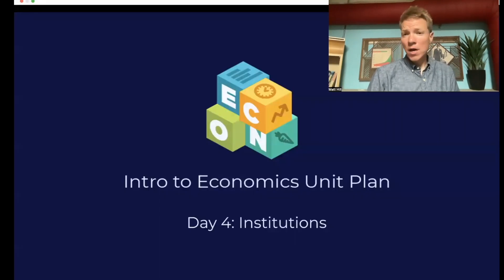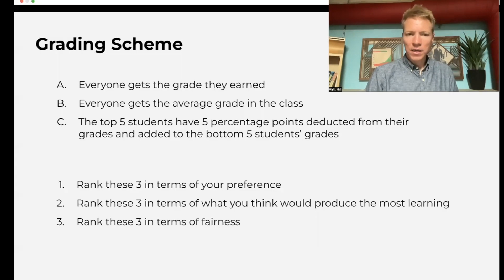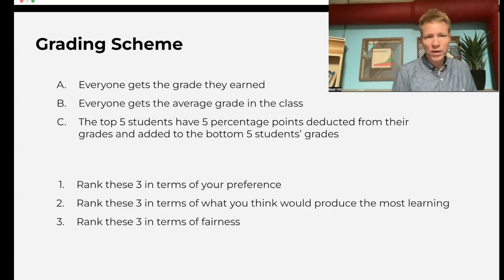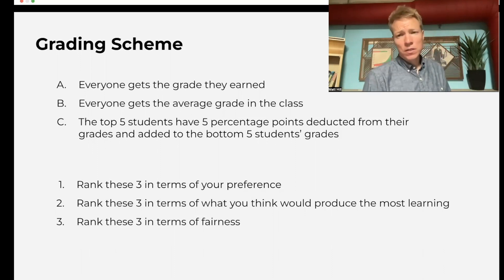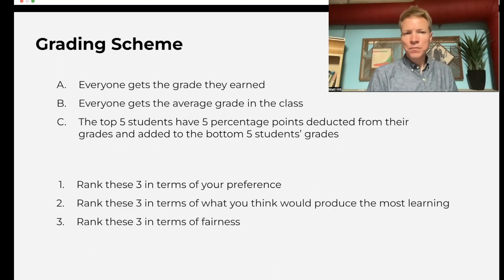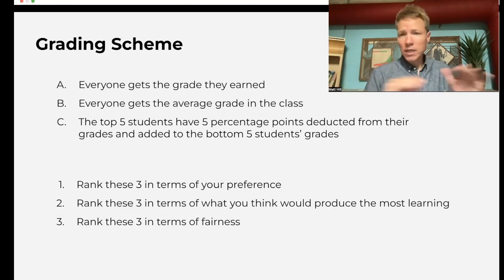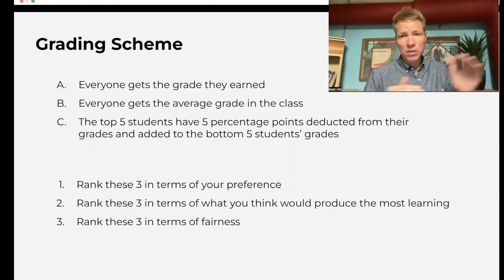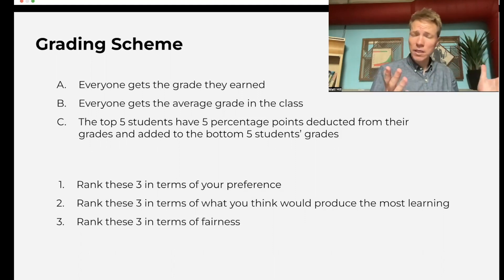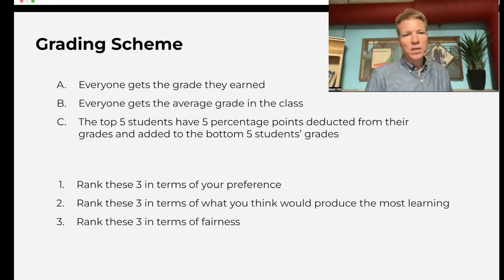So this day is all about institutions. For a bell ringer, have the students think about three different potential grading schemes. Grading scheme A: you get the grade you earn. Grading scheme B: everyone just gets the average — whatever the average in the class turns out to be, everyone gets that. If you get an A but the average is a B, you get a B. But if you get a C and the average is a B, you also get that B. Another potential scheme is scheme C.